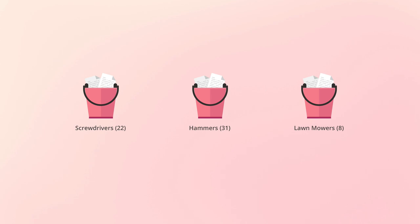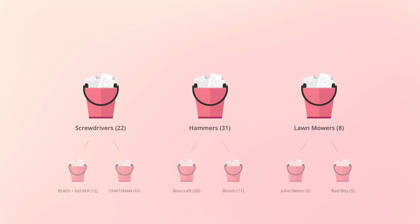These bucket aggregations can actually be nested. For instance, we can nest another terms aggregation to create a bucket for different product brands. These buckets then contain the documents that satisfy two criteria: the criterion for the bucket itself, plus the parent bucket's criterion. Nested aggregations therefore operate on the documents created by their parent aggregation, otherwise known as the aggregation context.